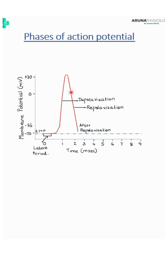Once the repolarization phase is reached, the potential will continue to decrease even after the resting membrane potential, and that phase is known as after hyperpolarization. After this stage, the membrane potential will come back to its resting membrane potential.